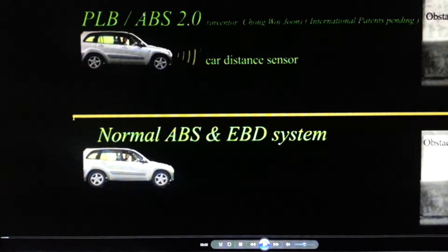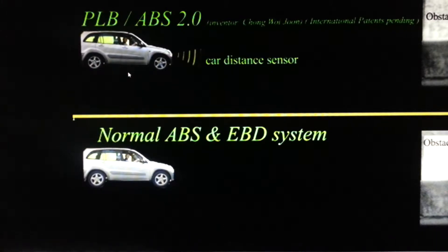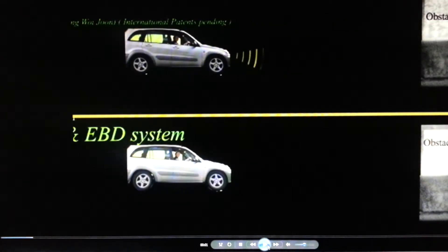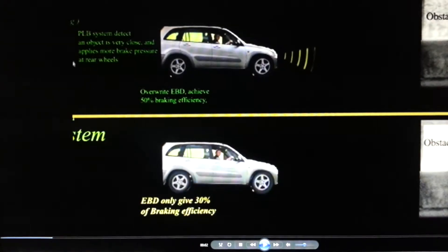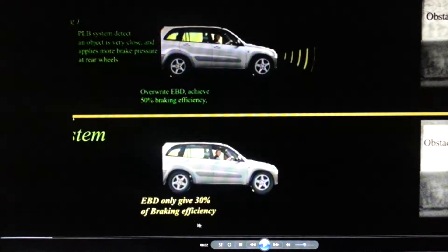The upper car comes with a distance sensor measuring the distance between our car and the leading obstacles, taking into consideration our own car speed. As the car moves closer to the leading obstacle, the PLB system detects the object is very close and applies more brake pressure to the rear wheels, overriding EBD to achieve 50% of the initial braking efficiency.